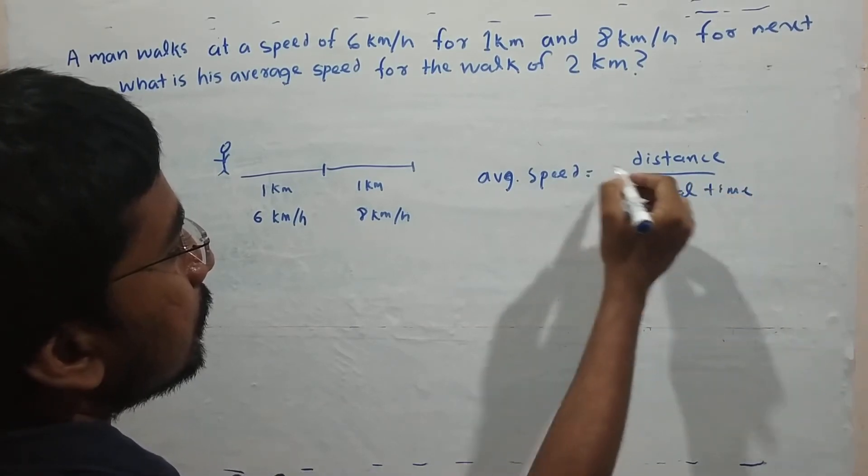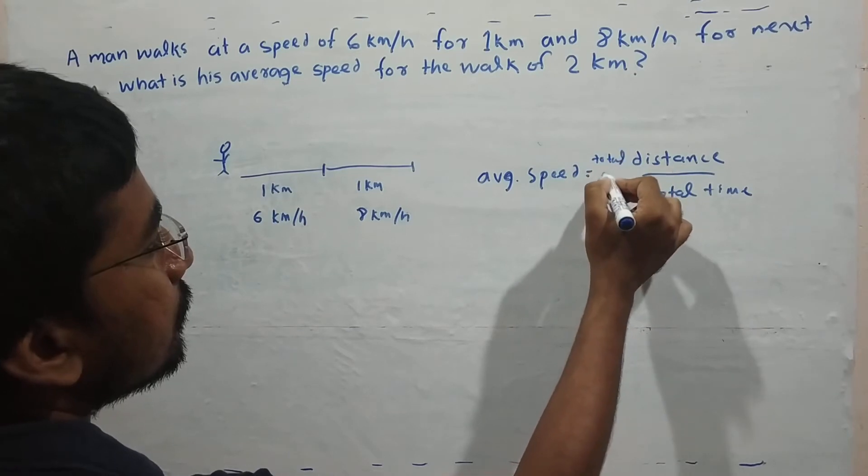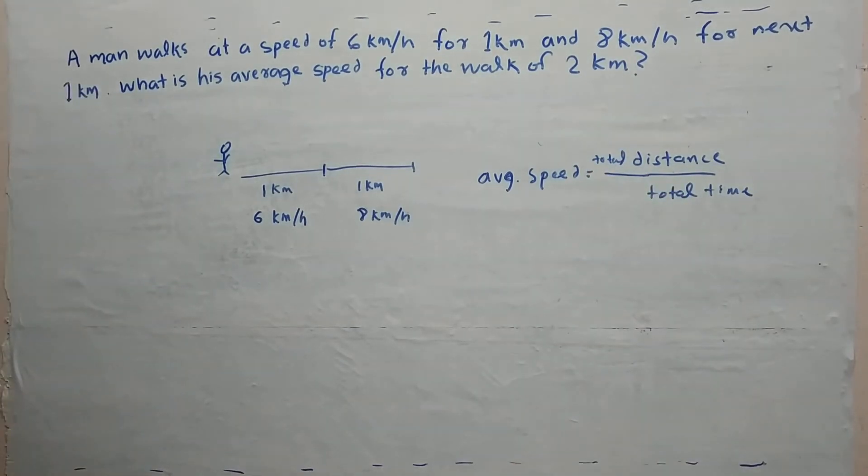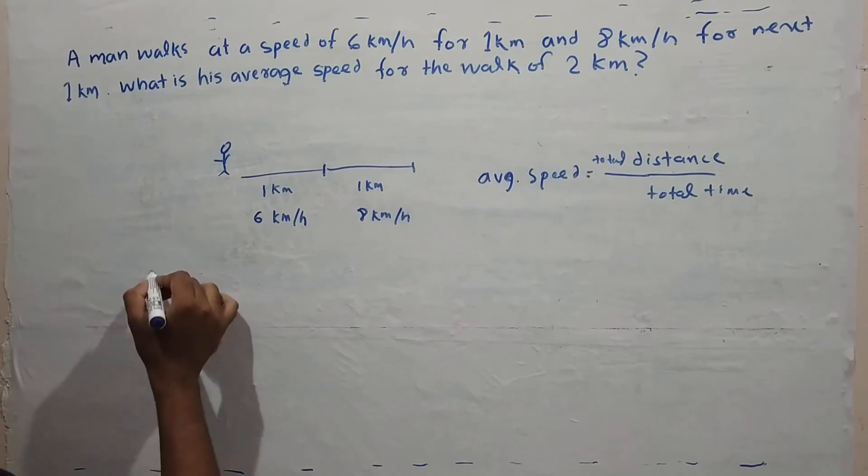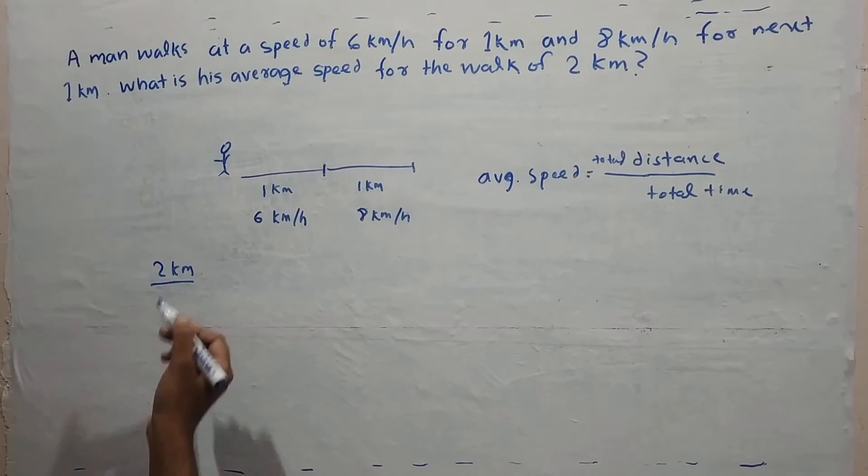Here, we know the total distance is 2 km. But what is the time? We have to derive it.